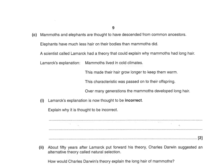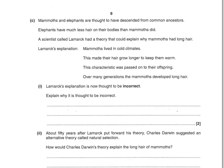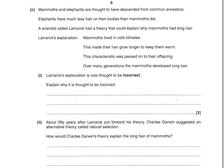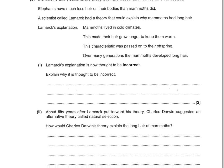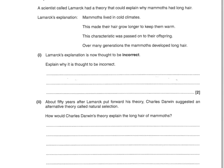Mammoths and elephants are thought to have descended from common ancestors. Elephants have much less hair on their bodies than mammoths did. A scientist called Lamarck had a theory to explain why mammoths had long hair. Lamarck's explanation was that mammoths lived in cold climates, which made their hair grow longer to keep them warm. This characteristic was passed on to their offspring, and over many generations the mammoths developed long hair. Lamarck's explanation is now thought to be incorrect.